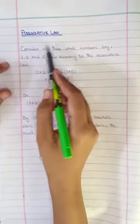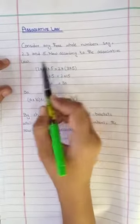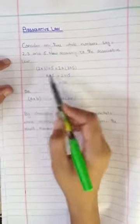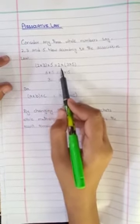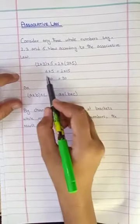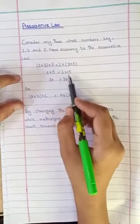you will see the associative law. You will have three whole numbers, 2, 3, 5, and now we will multiply them according to associative law. 2 into 3 into 5 is equal to 2 into 3 into 5. Now we will multiply them, so 6 into 5 is equal to 2 multiply 15.